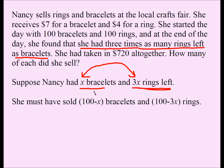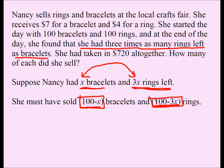Based on these two variables, X and 3X, if I know she was left with X bracelets, I know she sold 100 minus X bracelets. If she was left with 3X rings, I know she sold 100 minus 3X rings. Now we are going to use these two expressions to construct our equation.